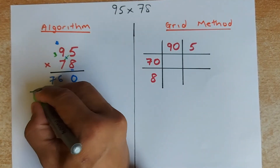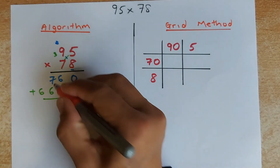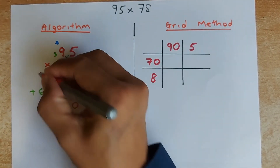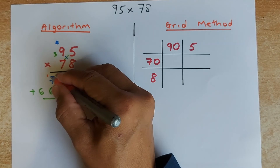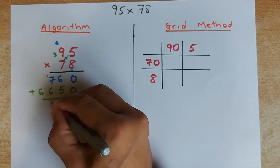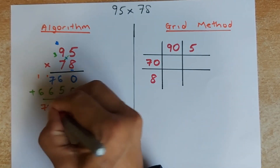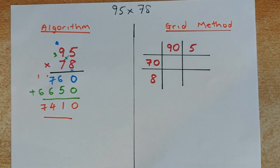And the last step, you are going to add them up. So 0 plus 0 is going to be 0. 6 plus 5 is 11 — carry up 1. 6 plus 7 is 13, plus 1 is 14 — carry up 1. 1 plus 6 is going to be 7. And the answer is 7, 4, 1, 0.